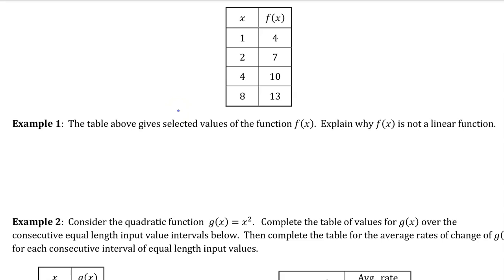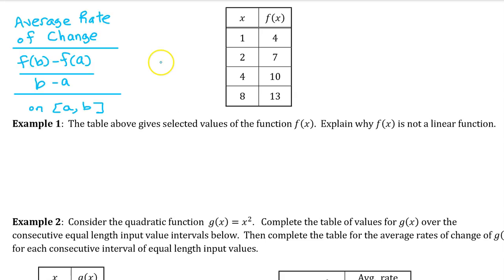Example 1. The table above gives selected values of the function f of x. Explain why f of x is not a linear function. On the interval from a to b, the average rate of change of f of x is f(b) minus f(a) over b minus a — in other words, change in y over change in x. If f of x is a linear function, then the rate of change should be constant for any interval.